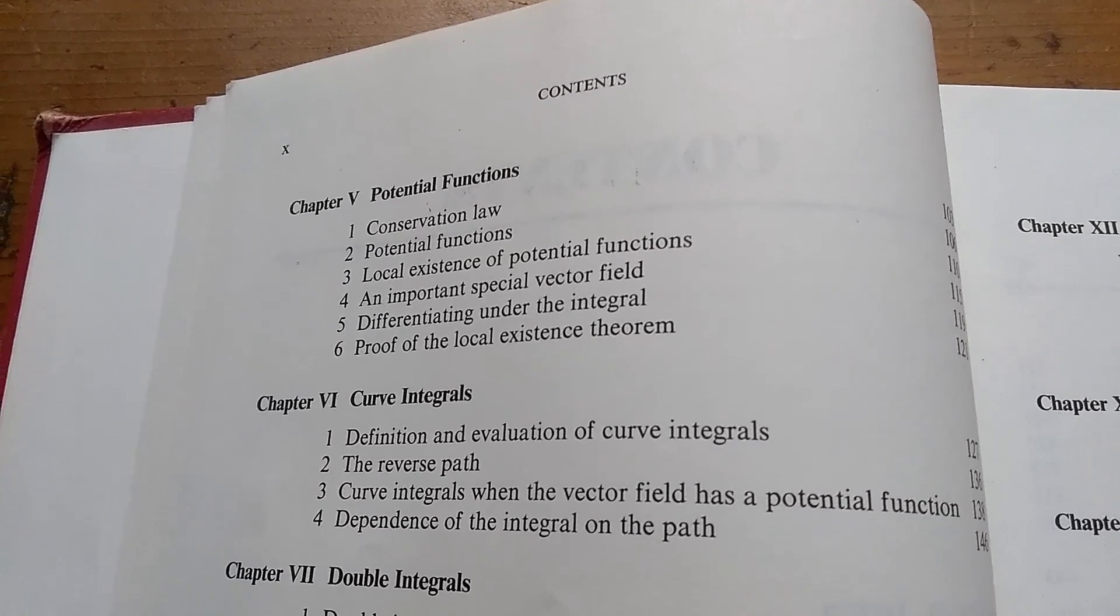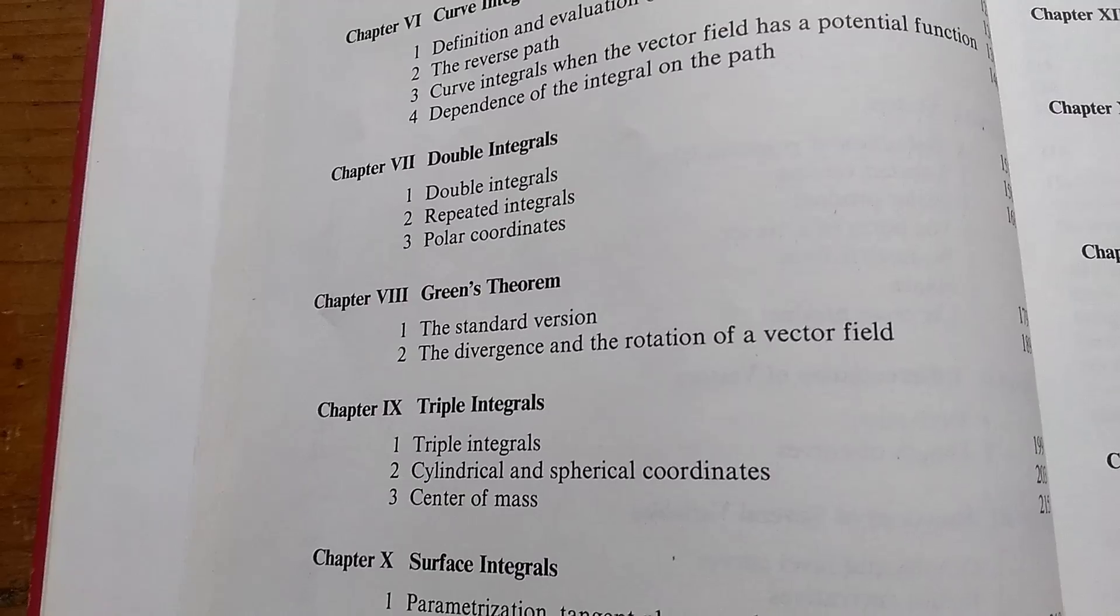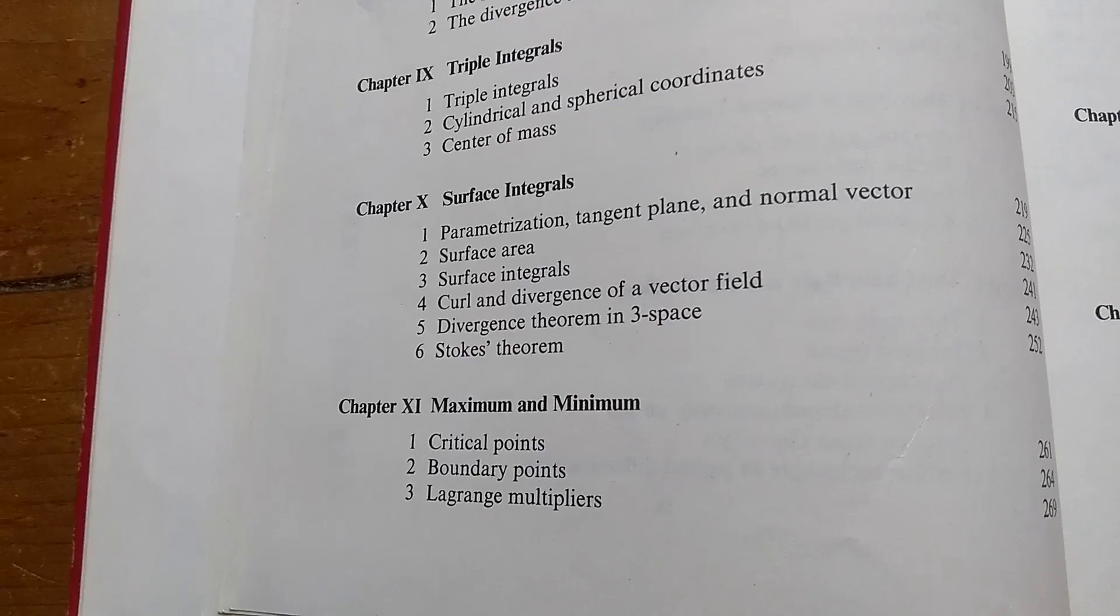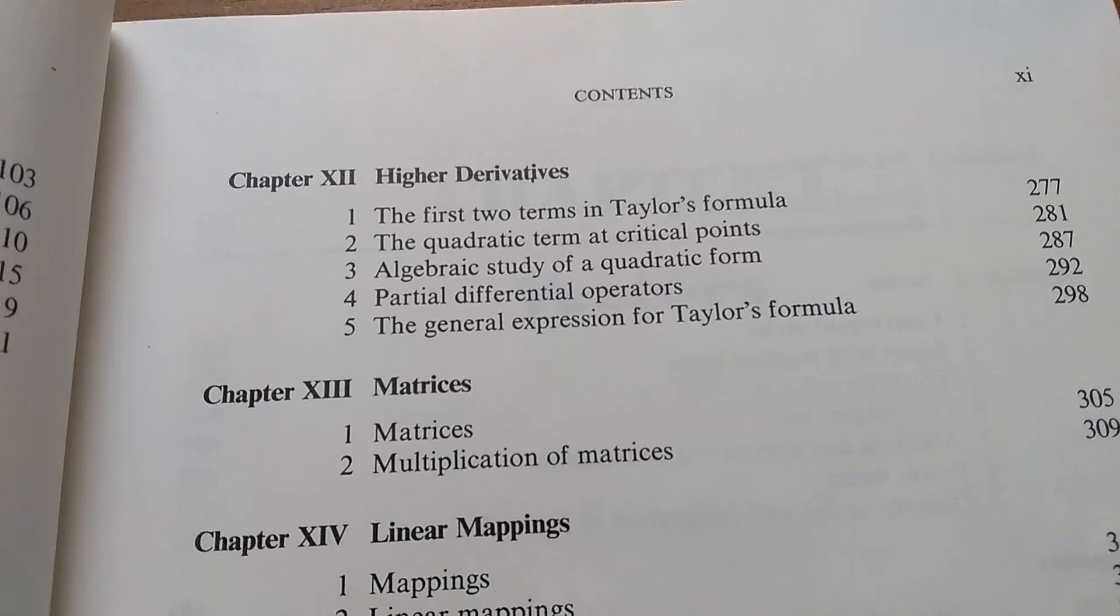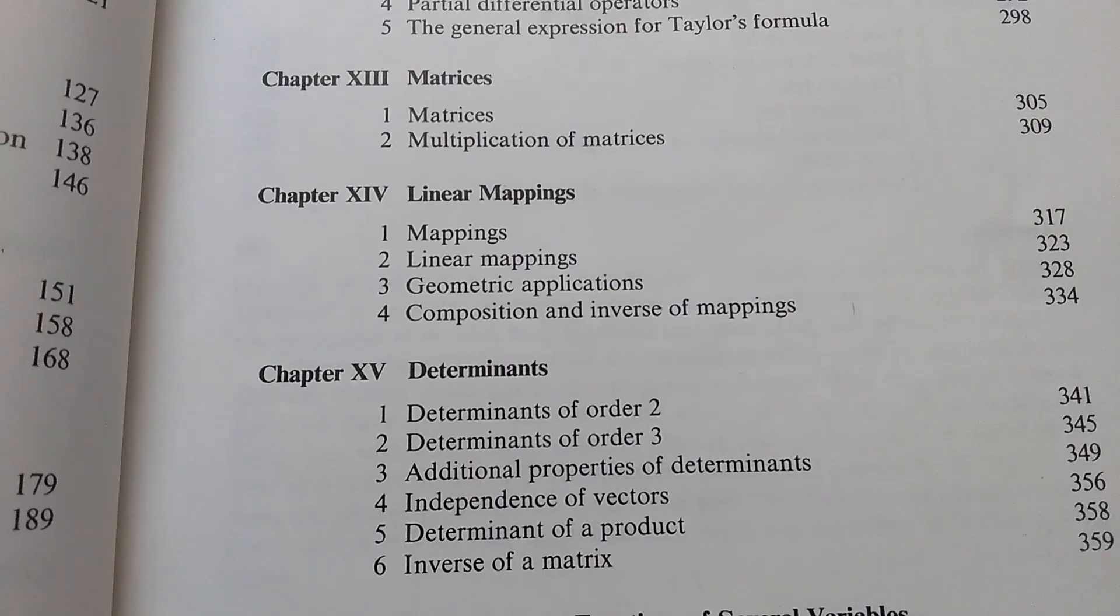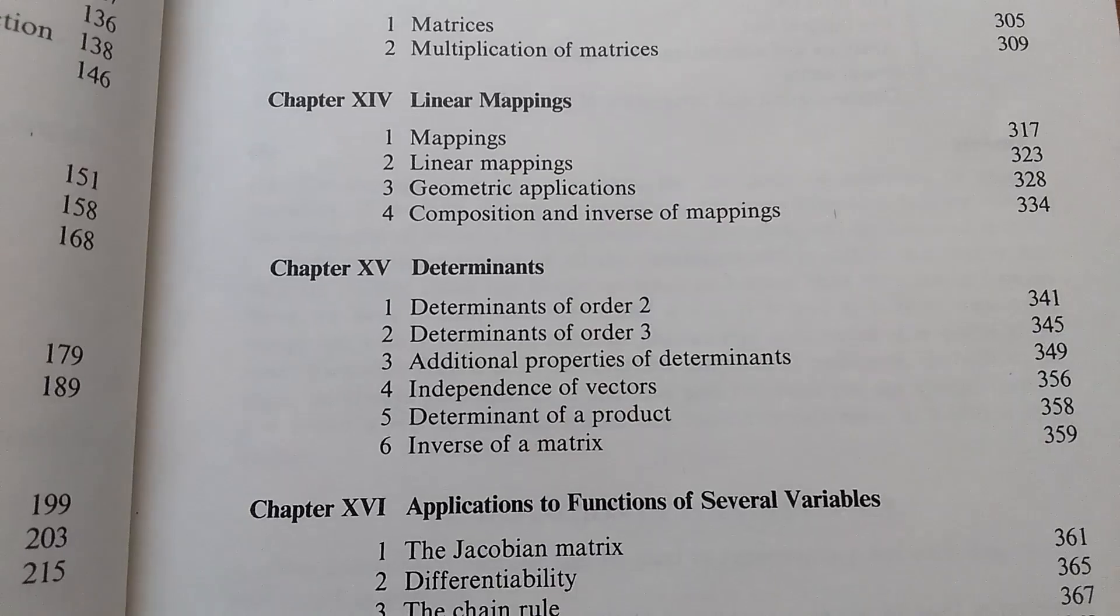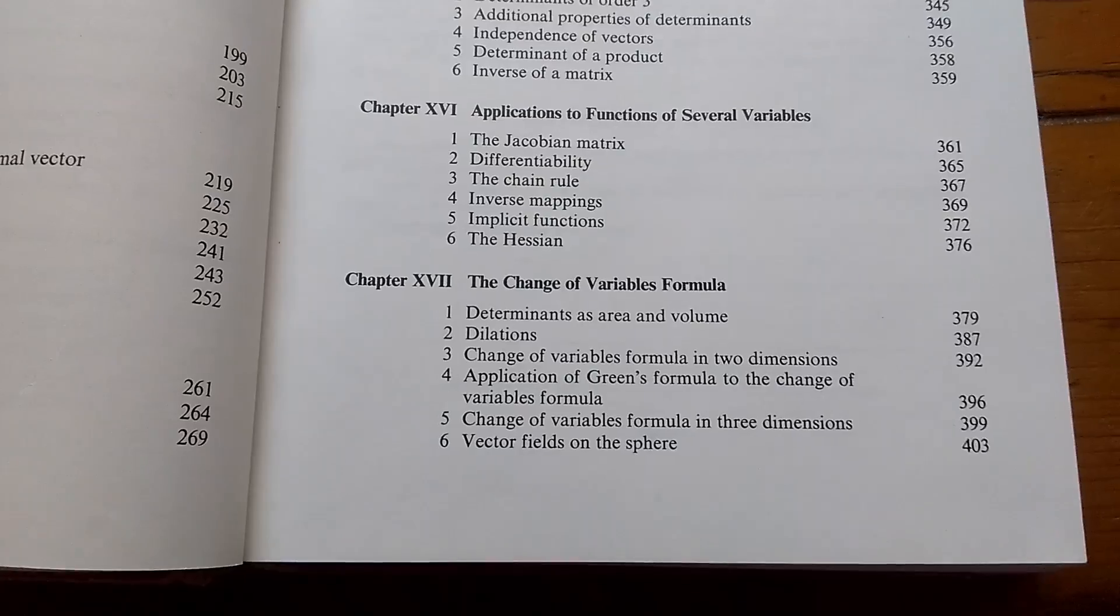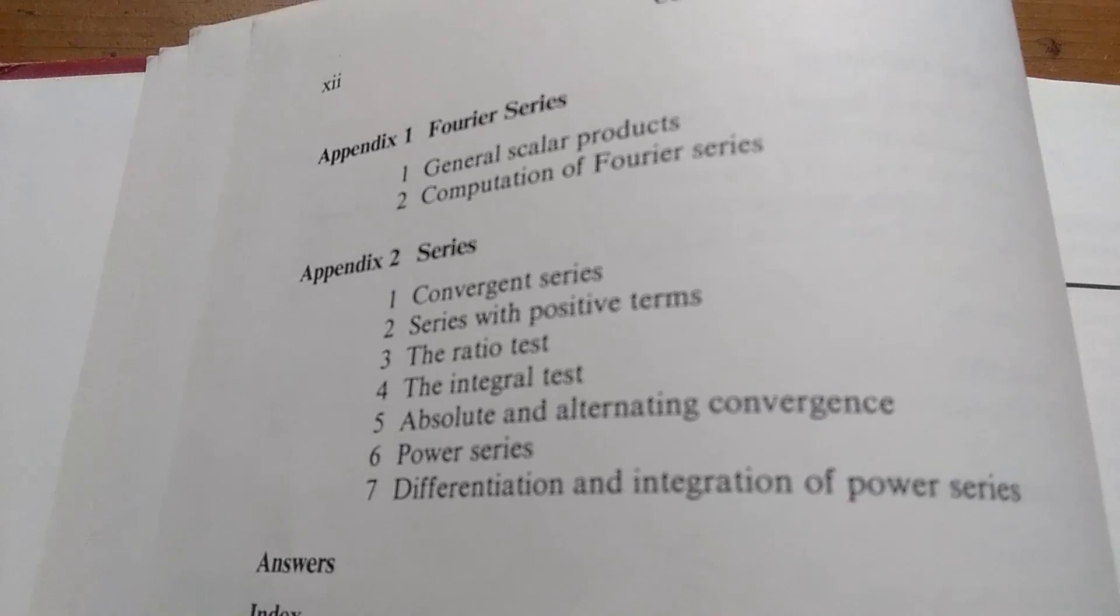He jumps into potential functions, then goes on to what he calls curve integrals, double integrals, Green's theorem, then triple integrals, surface integrals, maximum and minimums, some higher derivatives, then he talks about linear mappings, determinants. So this is stuff that a lot of the modern calculus books don't discuss. Applications to functions of several variables, the change of variables formula. He actually does briefly talk about Fourier series and series in the appendices.